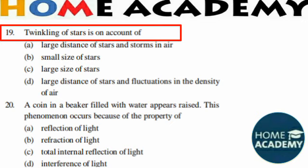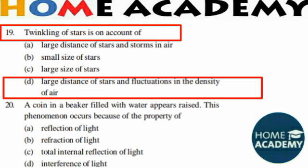Question number 19: Twinkling of stars is on account of what? The large distance of stars alone or small size of stars does not explain it. The correct answer is the large distance of stars and the fluctuation in the density of the atmosphere, which causes twinkling.